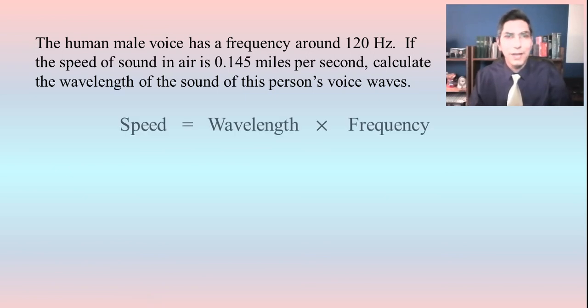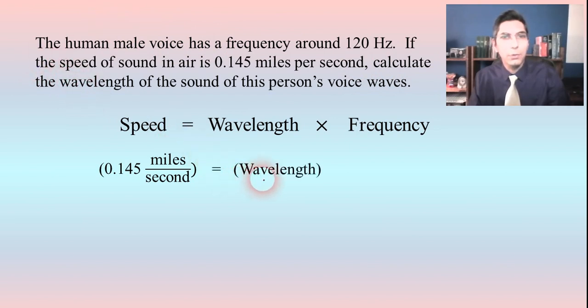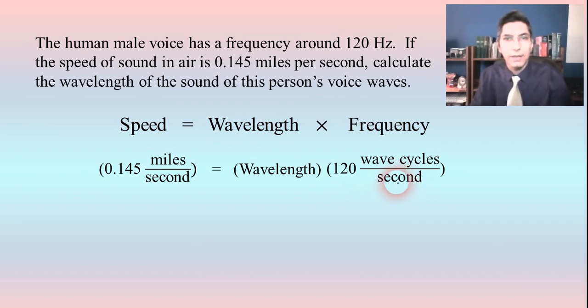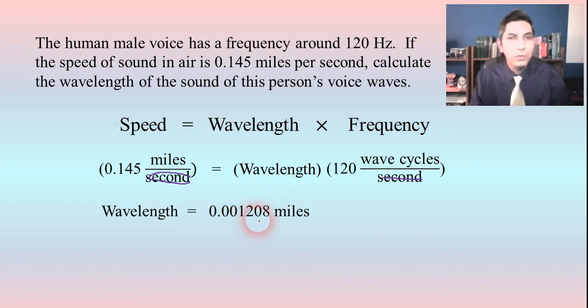Well, we're going to use that equation that we just had on the board. It was speed equals wavelength times frequency. So we're just going to plug and chug into this equation here. The speed of the sound wave here is 0.145 miles per second. So I'll plug that in. And then it's equal to wavelength. Well, that's what we're solving for. So we're going to have to leave that as our unknown. We'll just call it wavelength. And the frequency is 120 hertz. So we'll put that as 120 wave cycles per second. So when we cancel out seconds on both sides of the equal sign, we can see that we're just going to divide 0.145 by 120 in order to solve for wavelength using simple algebra here. So when I do that, I find that every wave cycle has a wavelength of 0.001208 miles.